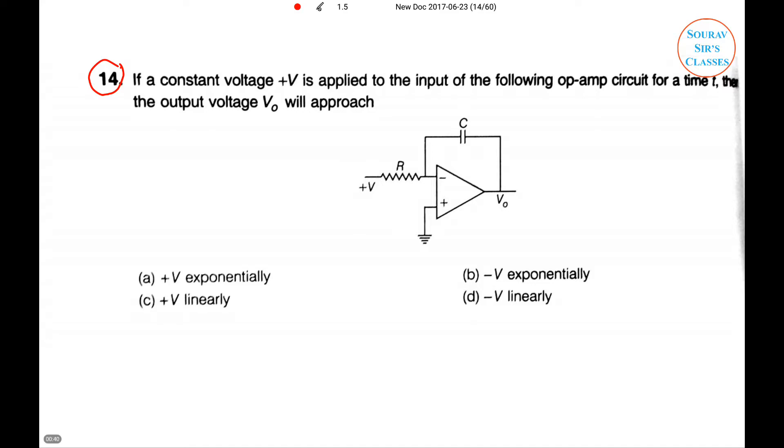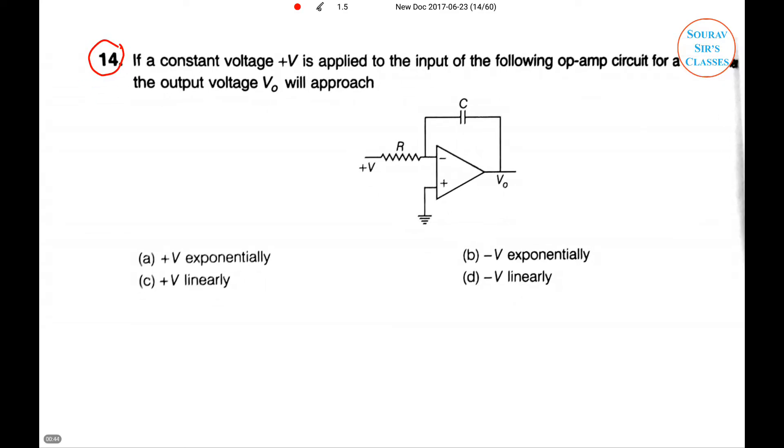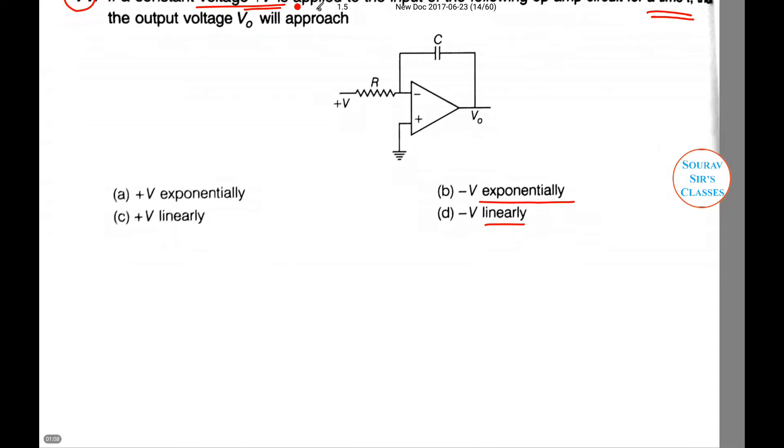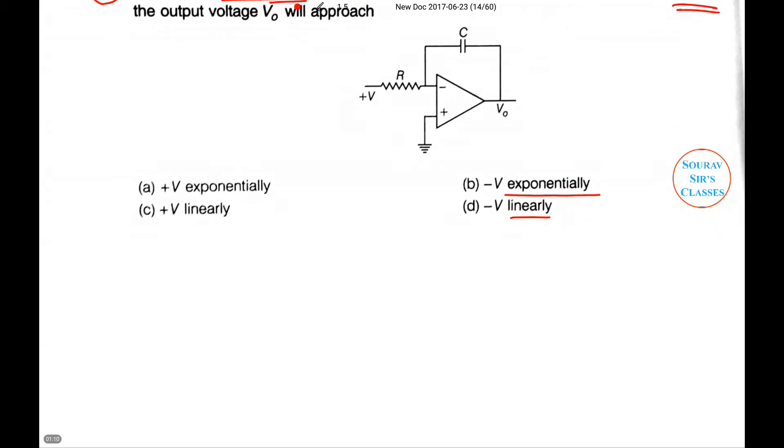Without any further introduction, let us go to the questions. Question 14: If a constant voltage of +V is applied to the input of the following op-amp circuit for a time t, then the output voltage V0 will approach +V exponentially, +V linearly, -V exponentially, or -V linearly?